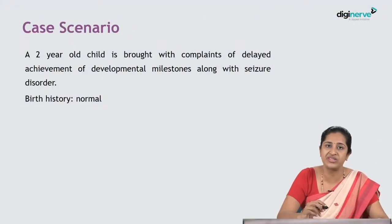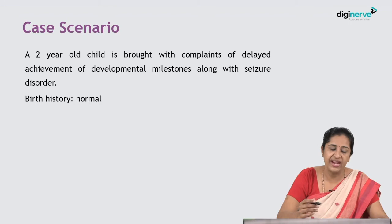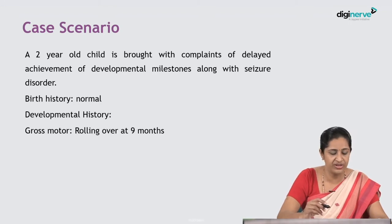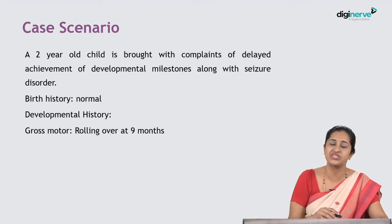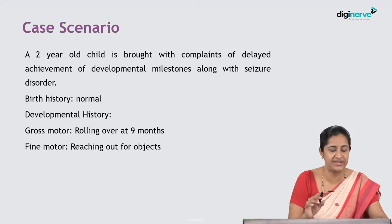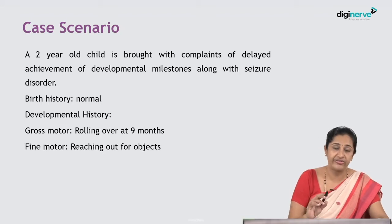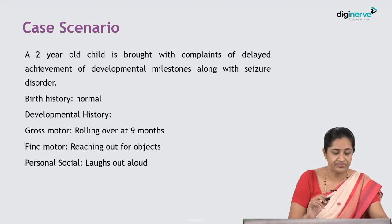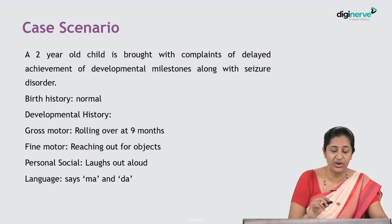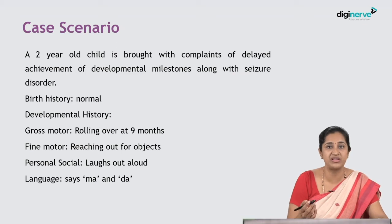A two-year-old child is brought with complaints of delayed development and seizure disorder. Birth history was normal. Developmental history showed the child attained rolling over at nine months. Fine motor, she was reaching out for objects now. Personal social, the child is laughing out aloud. And language, she says mamma, dada only now.